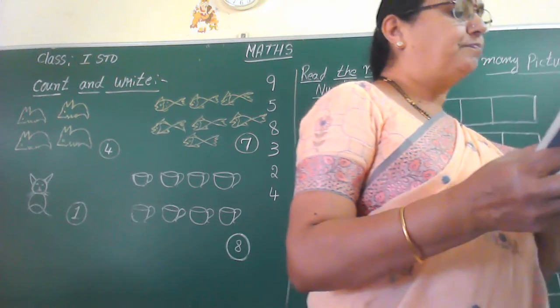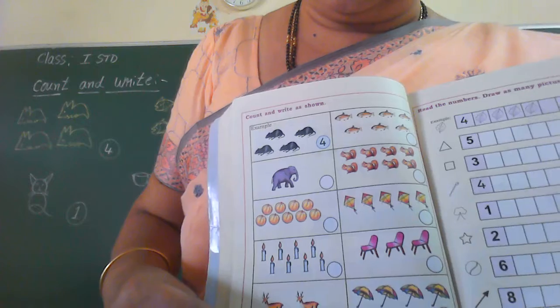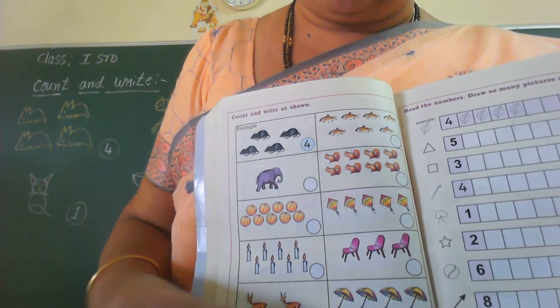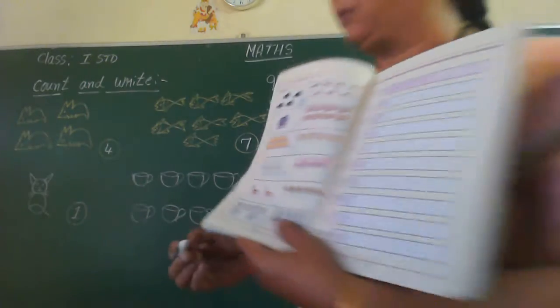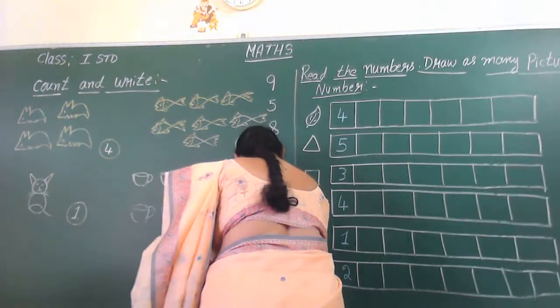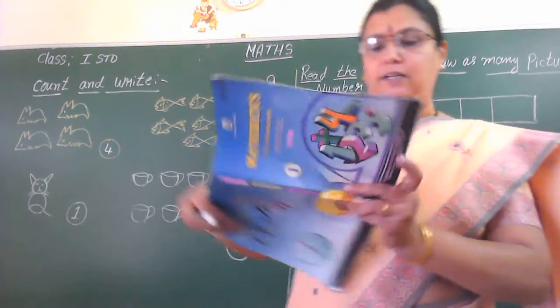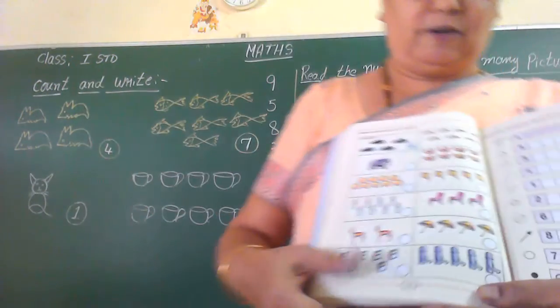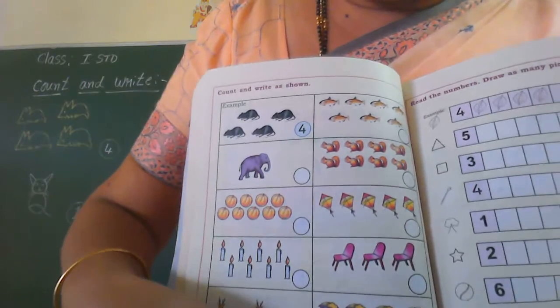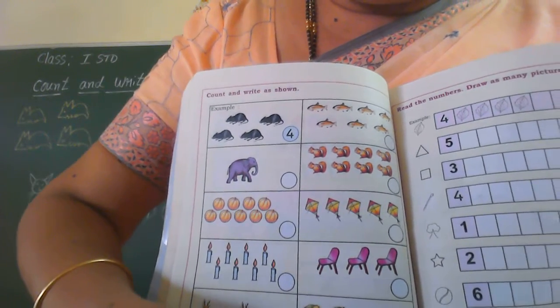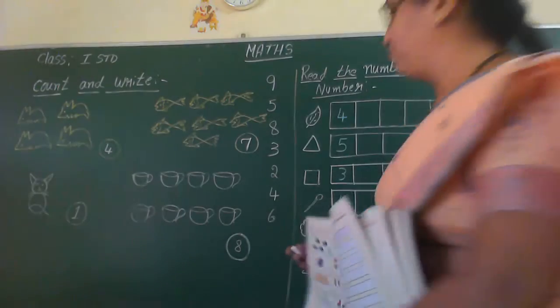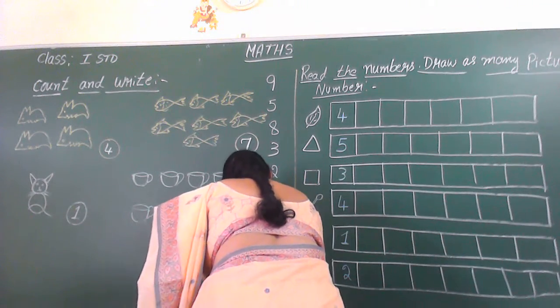Next one. There are books. We will count. One, two, three, four, five, six. How many books are there children? Six books. So write six in this circle. Last one, how many? Flask — one, two, three, four, five. Or you can say bottle also. There are five. So write number five.